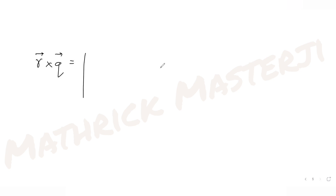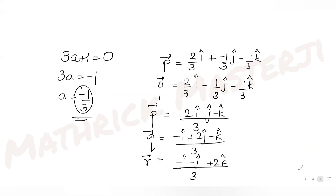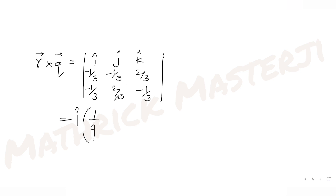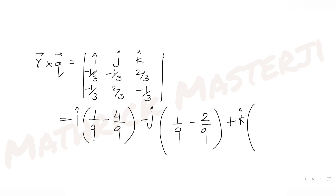For the cross product r×q, we compute the determinant with i, j, k in the first row, r = (−1/3, −1/3, 2/3) in the second row, and q = (−1/3, 2/3, −1/3) in the third row. Expanding: i[(−1/3)(−1/3) − (2/3)(2/3)] − j[(−1/3)(−1/3) − (2/3)(−1/3)] + k[(−1/3)(2/3) − (−1/3)(−1/3)].